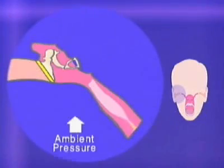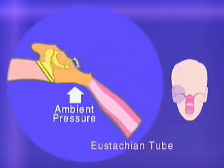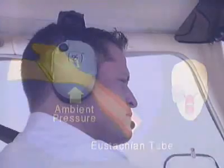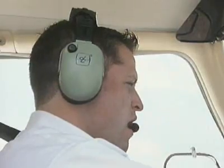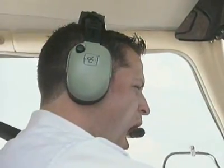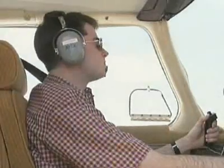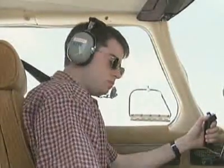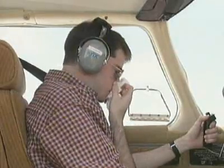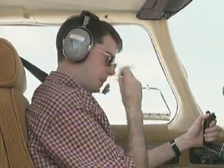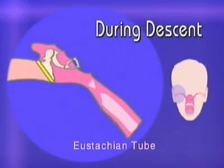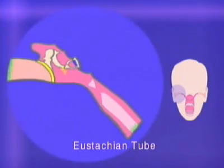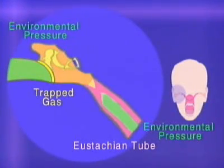During descent, as the ambient pressure increases, air forcibly re-enters the middle ear through the Eustachian tube. This equalization process is accomplished simply by swallowing or using an exaggerated jaw movement. However, if the person has an upper respiratory infection like a cold with nasal congestion, the Eustachian tube may be blocked due to local swelling. Although the middle ear may allow the escape of expanding gas on ascent, it is unlikely that it will allow the re-entering of air during descent. Consequently, an air pressure differential develops between the middle ear and the environment that will cause the eardrum to retract.